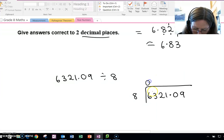8s into 6 goes 0, carry over the 6. 8s into 63, 7 times 8 is 56, which means I've got 7 left over. 8s into 72, 9 times 8 is 72. So that's exactly, so there's nothing left over to carry. 8s into 1, it doesn't go, so I need to carry the 1 over.